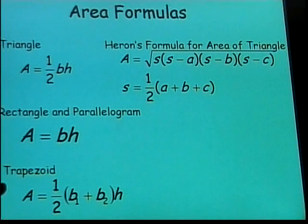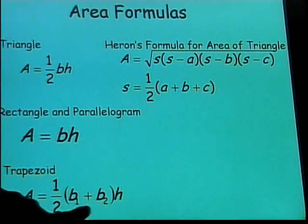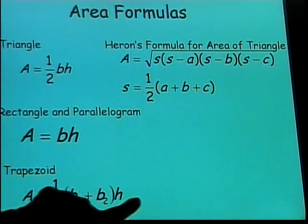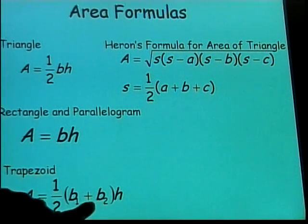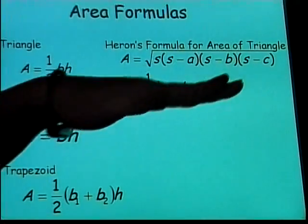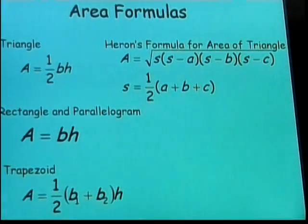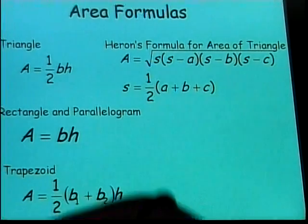The formula for the area of a trapezoid is one-half the sum of base one plus base two, times height. Base one and base two are the top and bottom sides of the trapezoid that are parallel to each other.